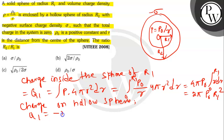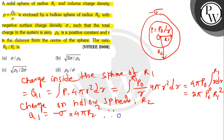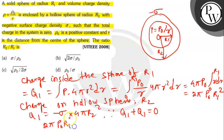It will be 2 pi P0 R1 square. And charge on the hollow sphere will be Q2 equals to minus sigma into 4 pi R2 square.